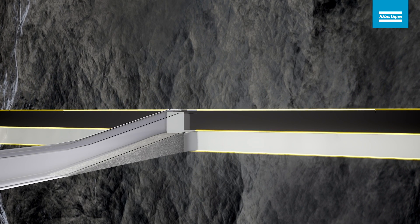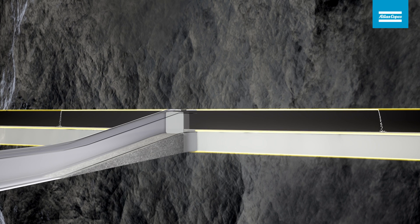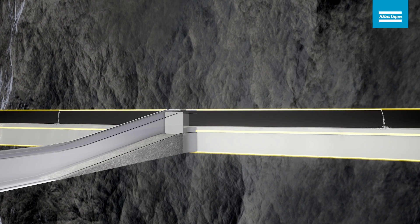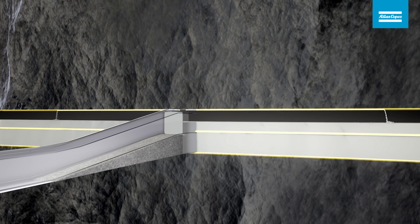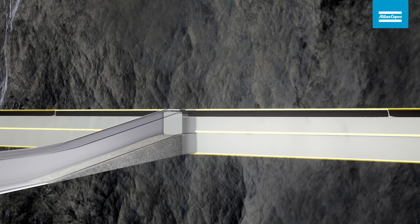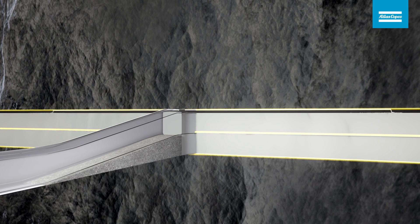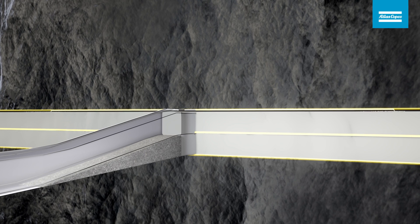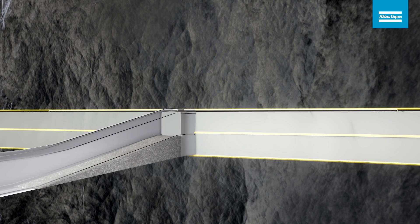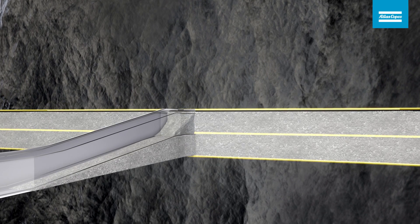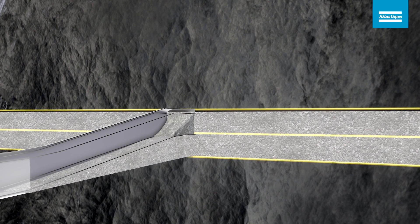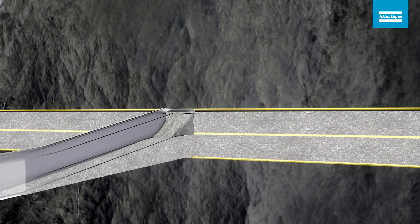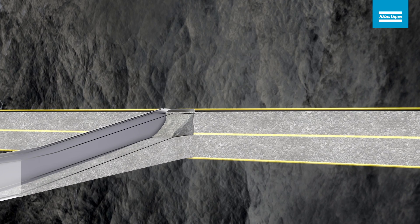One of the advantages with cut and fill mining is the possibility to reuse waste for backfill material, such as tailing sand from the processing plant or waste rock from development.